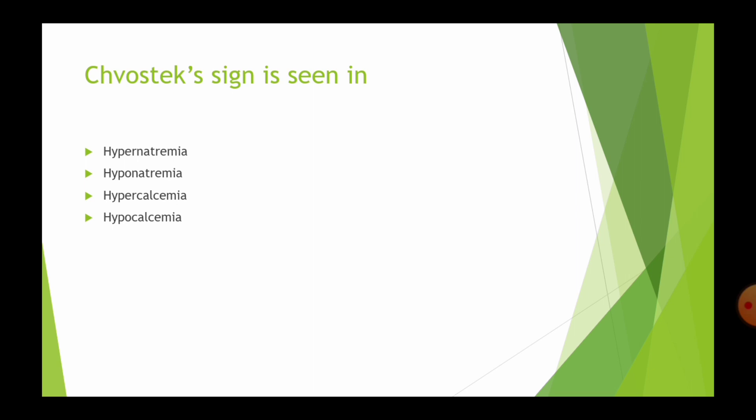First question, Chvostek's sign is seen in Hypernatremia, Hyponatremia, Hypercalcemia and Hypocalcemia. Chvostek's sign is seen in Hypocalcemia.